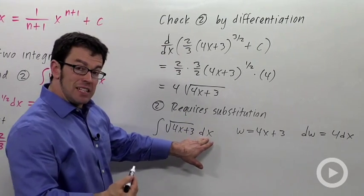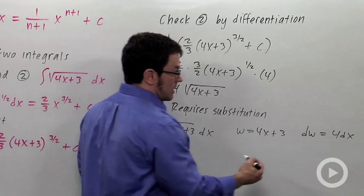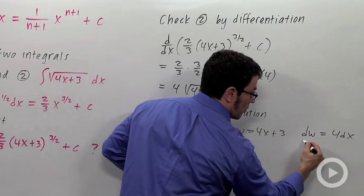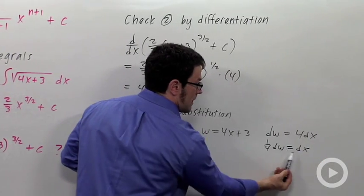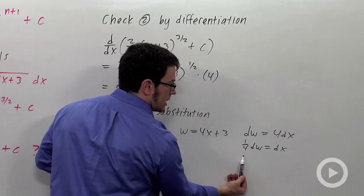Now, I have a dx. I don't have a 4 times dx. So, what I need to do is multiply both sides by 1 quarter. So, 1 quarter dw is going to equal dx. And this is what I'm going to replace my dx with. 1 quarter dw.